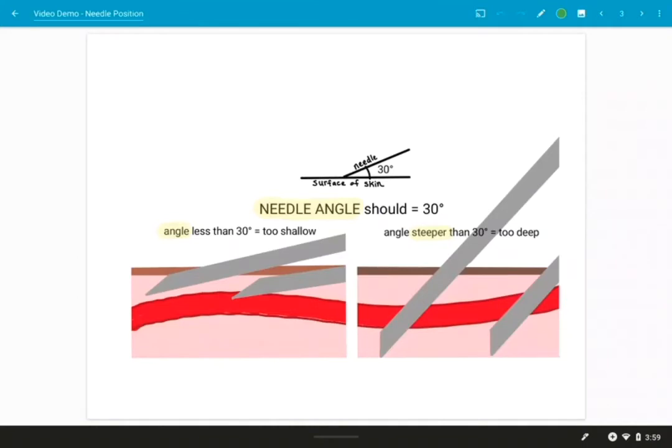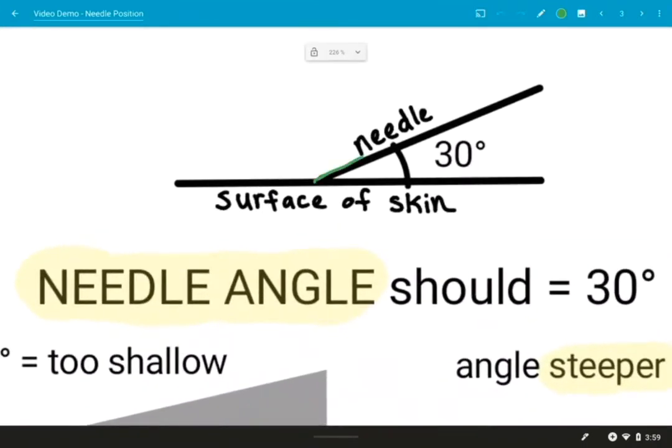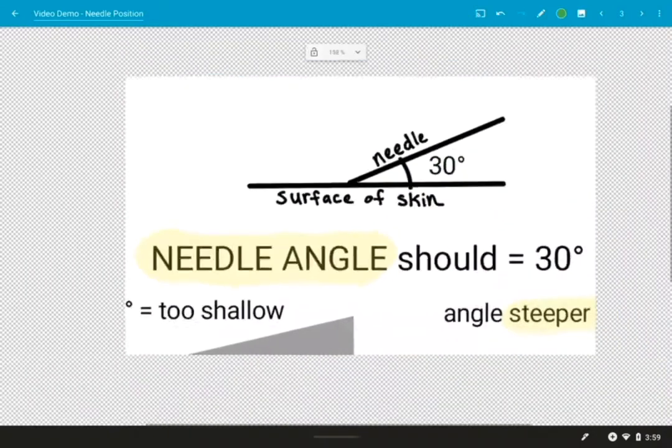All right. And we can now talk about the needle angle. So remember, this is the needle and this is the surface of the skin. And that should be 30 degrees. If you instead insert it at an angle that's less than 30 degrees, like maybe like 10 or 15 or something, it's going to be too shallow.